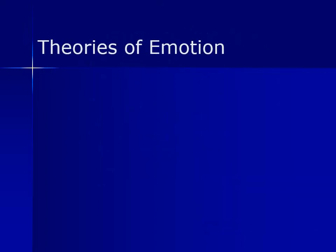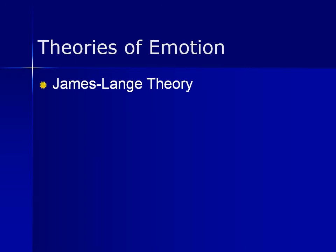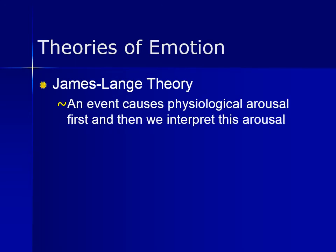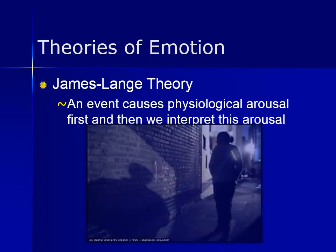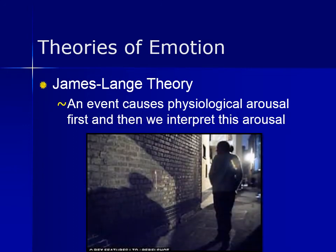The first theory of emotion is the James-Lange theory, which says that an event causes a physical reaction first, and then we interpret this arousal — only after we interpret the arousal can we experience emotion. If the arousal is not noticed or given any thought, we will not experience any emotion. For example, you are walking down a dark alley late at night, you hear footsteps behind you and begin to tremble, your heart beats faster and your breathing deepens. You notice these physiological changes and interpret them as your body's preparation for a fearful situation, and then you experience fear. The progression goes: event → arousal → interpretation → emotion.